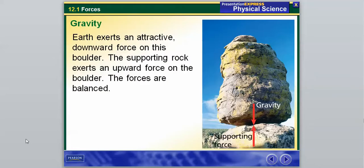Earth exerts an attractive downward force on this boulder. The boulder is attracted to the Earth. It's a constant attractive force there. The supporting rock underneath is exerting an upward force on the boulder, and therefore the forces are balanced. If you remember, we learned that when the forces are balanced, there's going to be no motion.